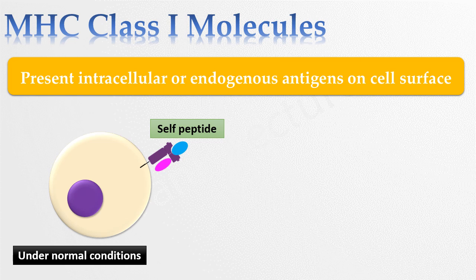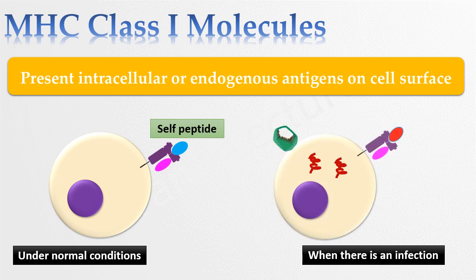So peptides derived from the degradation of proteins synthesized within the cell are presented by class 1 MHC molecules in their peptide binding groove. These peptides are self molecules. When there is an infection, for example a virus infects a cell, these MHC class 1 molecules present foreign peptides on the cell surface. These foreign peptides presented by the MHC class 1 molecules. It is the job of T cells to recognize self and non-self peptides.